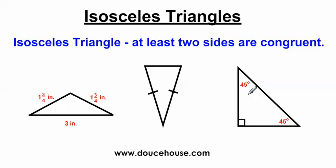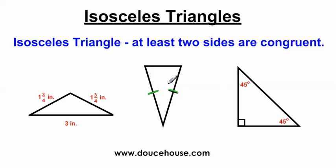I have a couple of examples of isosceles triangles right here. Now keep in mind this side is 1¾ inches and this side is 1¾ inches. Since these two sides have the same measure, that means this is going to be an isosceles triangle. This one is also an isosceles triangle because these two sides have the same amount of tick marks — one tick mark here, one tick mark here. Since these two sides have the same number of tick marks, these two sides are congruent to each other, so this is also an isosceles triangle.